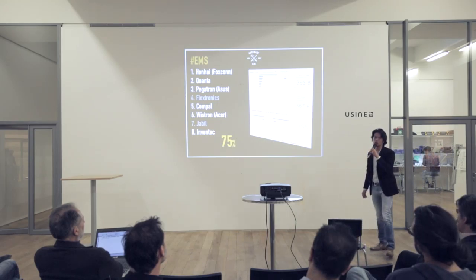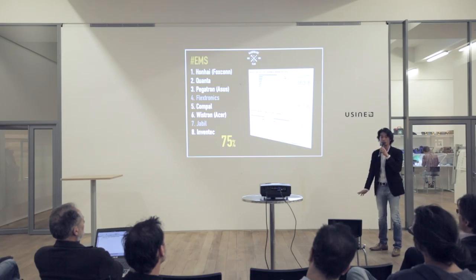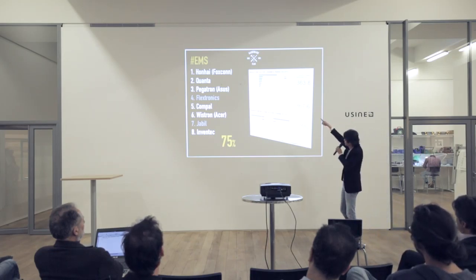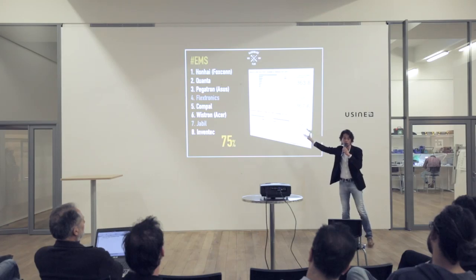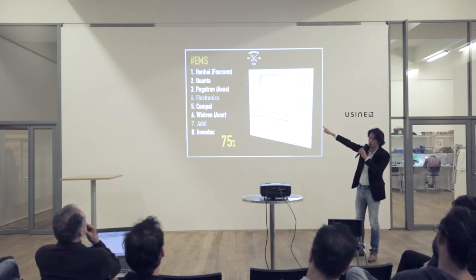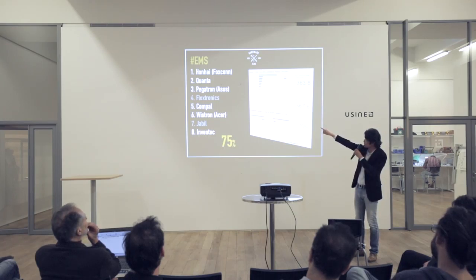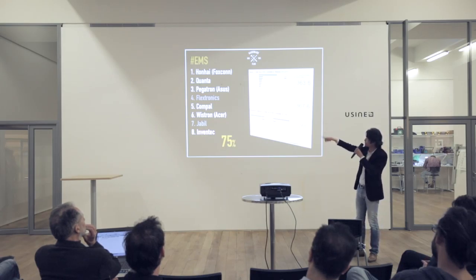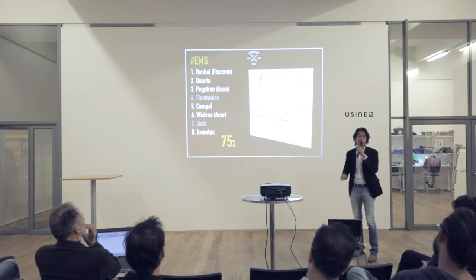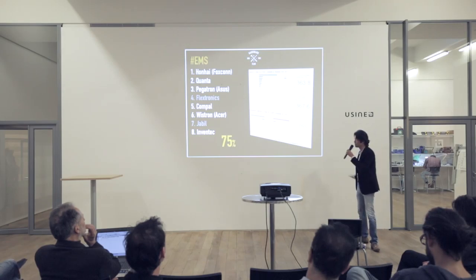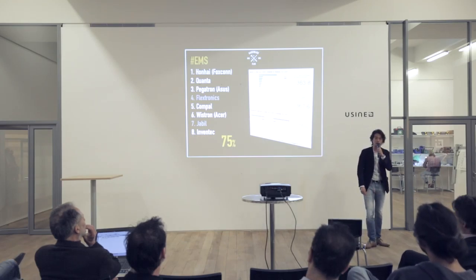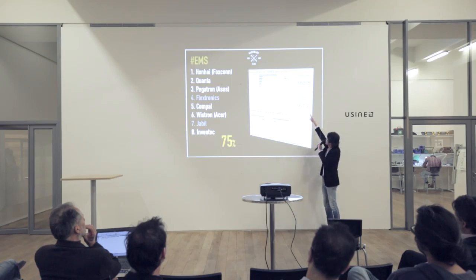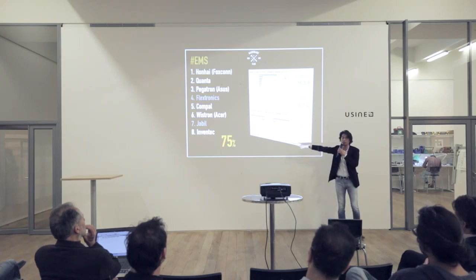Looking at the 2013 EMS company rankings by revenue: the runaway number one is Foxconn / Hon Hai. Then Quanta, Pegatron (the manufacturing department of Asus), Flextronics, Compal, Wistron (the manufacturing arm of Acer), Jabil, and Inventec in the top eight. One, two, three, five, six, and eight are all Taiwanese companies. Together they account for 75% of global EMS revenue — out of a total of $367 billion.